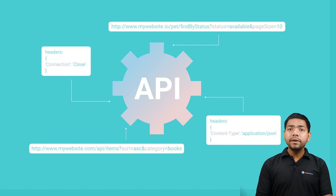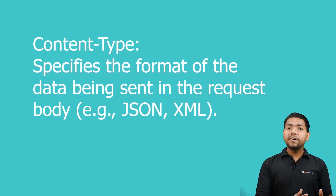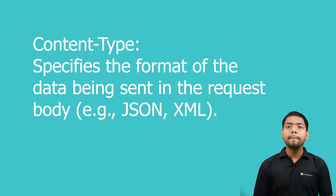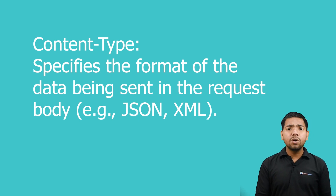The header in the OpenAPI includes Content-Type, which specifies the format of the data being sent in the request body, for example JSON or XML.